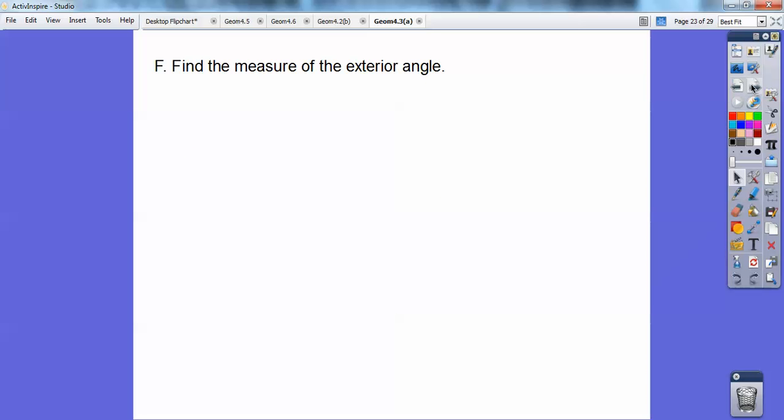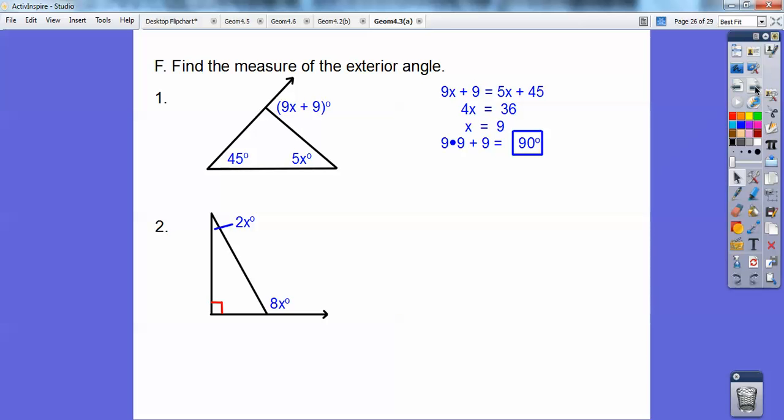All right, so find the measure of the exterior angle. This is from the last lesson. Remember, the exterior angle equals the sum of the two remote interior angles. So find out that X equals 9, and then it says find that, usually X is not the answer, so plug in 9. 9 times 9 plus 9 is 90. So that's a nice little right triangle.